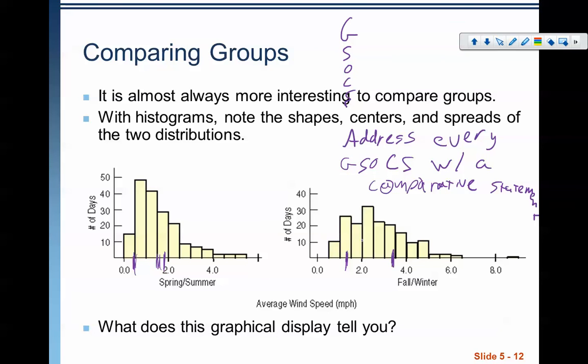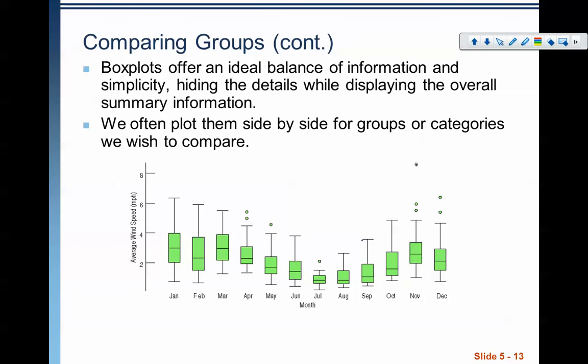Now we can even take this even further. And here is that same set of data, but this time spread out between all 12 months of the year. Now if we were to describe this, again, we would need to make sure that we're talking our GSOCs to compare the months. If you have this many box plots, you can probably talk more about a general trend of things. For example, we can kind of see here that the wind speeds, when you start in January, they dip in the spring and summer months, and then we kind of go back up.